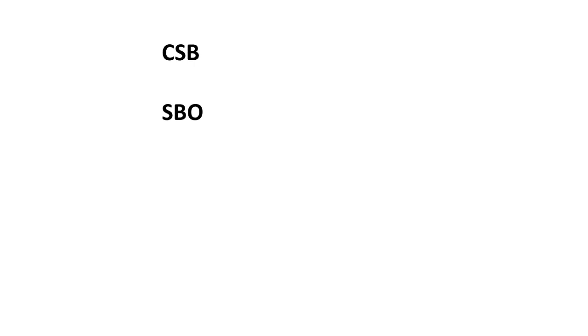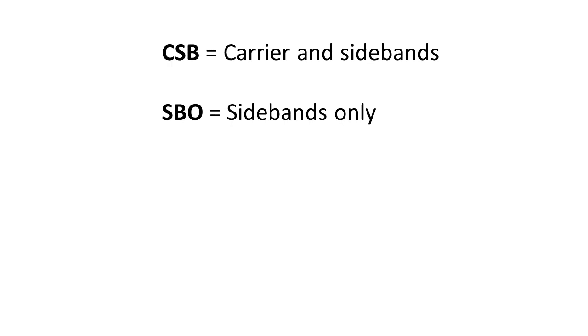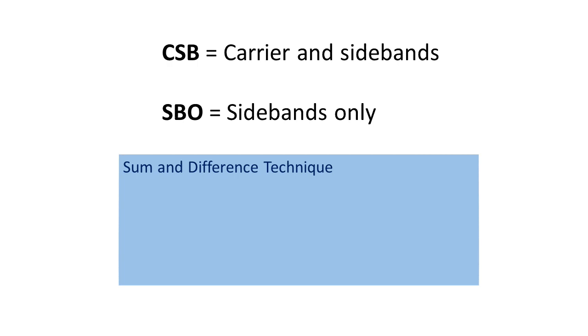The system in place in practical present-day ILS installations uses two signals — CSB and SBO — in a very elegant implementation of the required space modulation. CSB means carrier and sidebands; SBO means sidebands only. To understand how the variable modulation depth signal is formed you need to understand three analogue radio concepts: the sum and difference technique, the characteristics of double sideband suppressed carrier signals, and some antenna theory — specifically what happens when you feed broadside antenna arrays in antiphase. I'll deal with each of these concepts in turn.